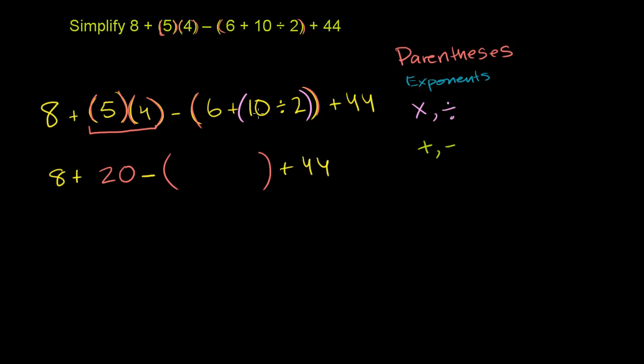So 10 divided by 2 is 5. So this will result in 6 plus 10 divided by 2 is 5. 6 plus 5.